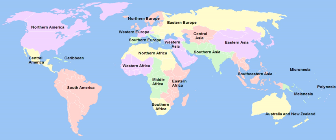Africa is divided into Eastern Africa, Middle Africa, Northern Africa, Southern Africa, and Western Africa. The Americas include Latin America and the Caribbean, with subregions of the Caribbean, Central America, and South America, as well as Northern America. These subregions together form the geographic continent of North America.